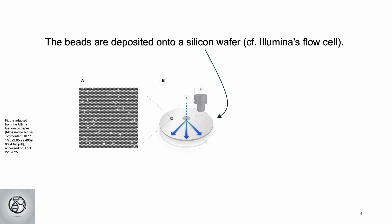Produced using mature semiconductor processes, the wafer is inexpensive to manufacture, helping Ultima reduce sequencing costs to $0.80 per gigabase or $80 per genome by 2025.